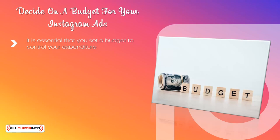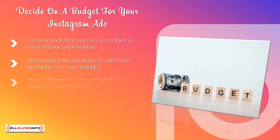When you are making a budget decision, consider the schedule for your ad campaign — what time of day you want to run your ads and what day you want to launch your campaign. Optimizing your ad delivery will have an impact on your budget. For example, you can choose link clicks in your ads, which will force the Instagram algorithm to calculate how to get you the most clicks for the lowest possible price. As an alternative, you can go for a number of impressions, meaning Instagram will show your ad as many times as your budget will allow. You could also choose a daily unique reach, where your ads are displayed to as many unique Instagram users for the money you are prepared to spend.